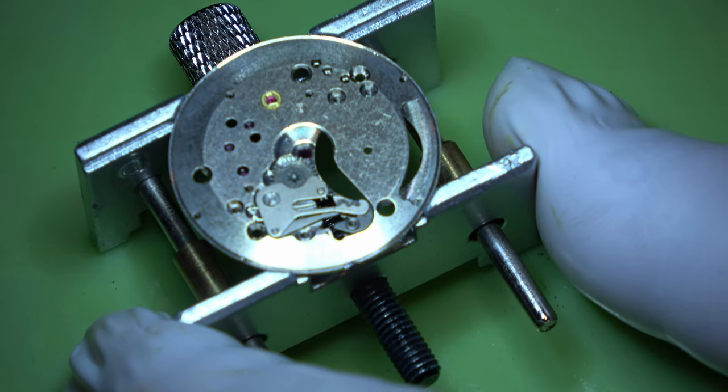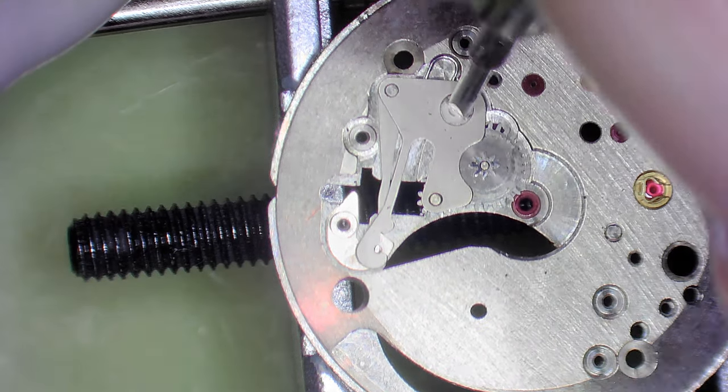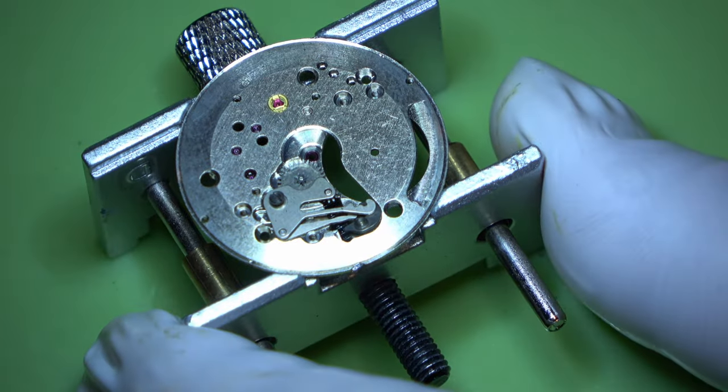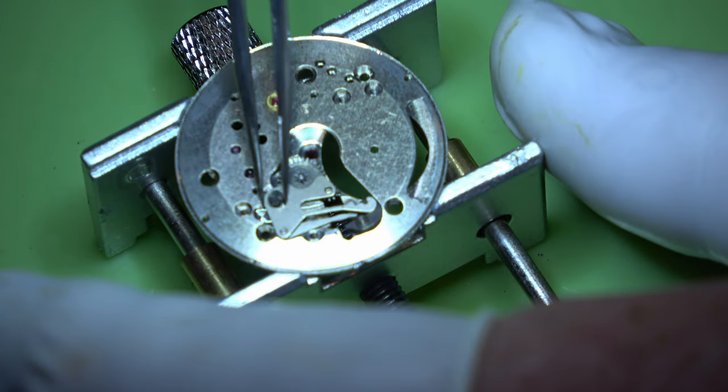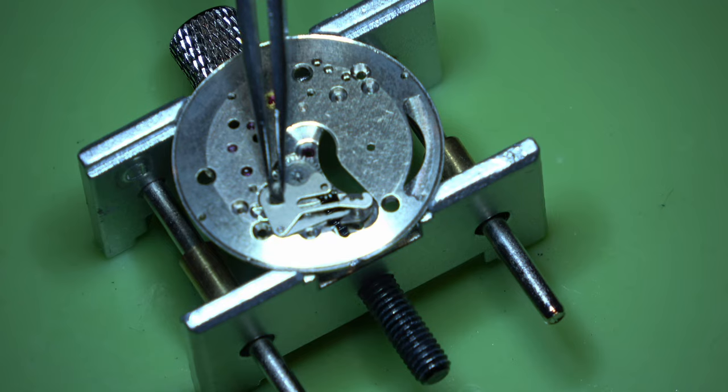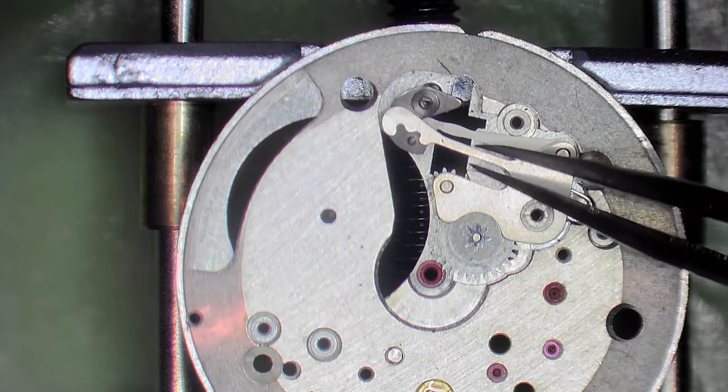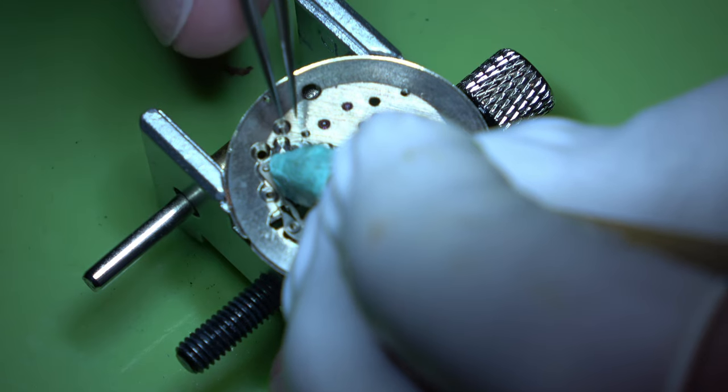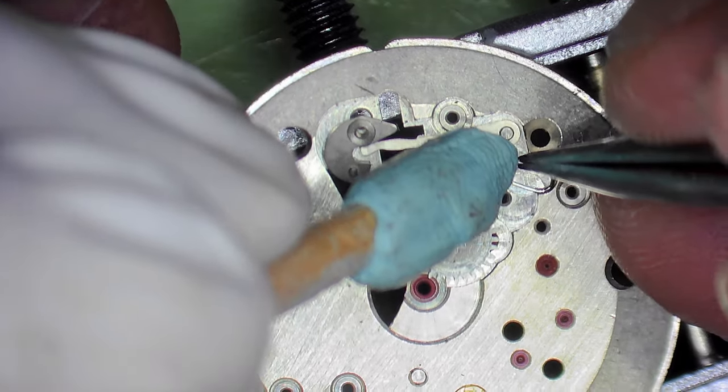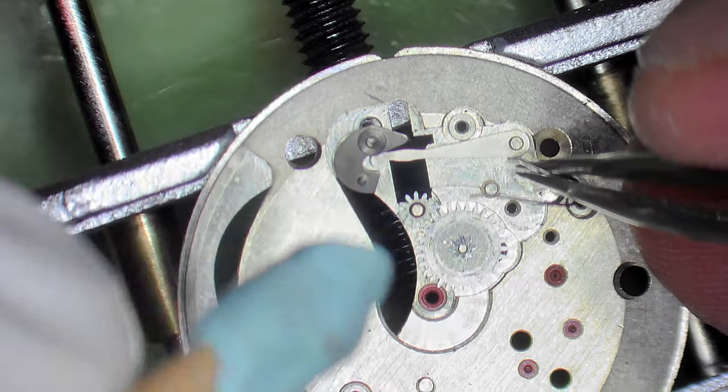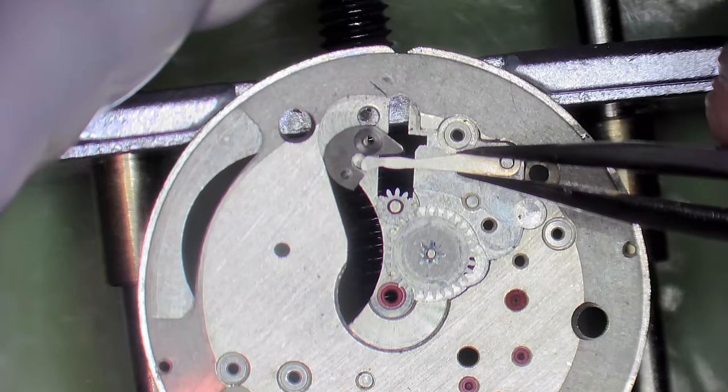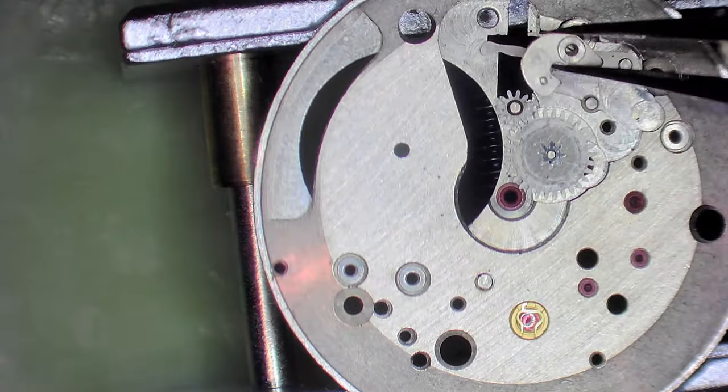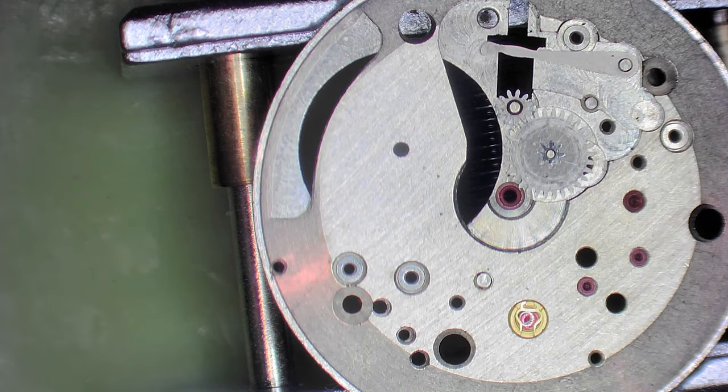We will turn the watch over and we will work on the keyless works. Now this is the bit that the stem operates. You pull it out to set the time and you push it in and you twist it to wind the watch up. We are just taking out this little spring. Again using a bit of rodico on the end of a bit of pegwood, that stops it flying off. Like that little bit did.